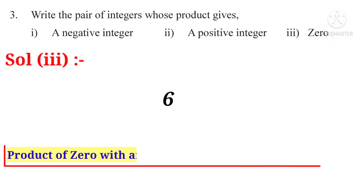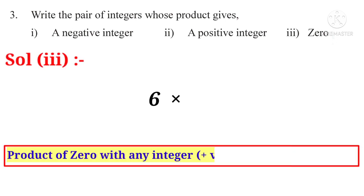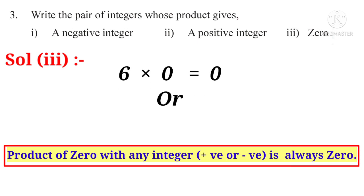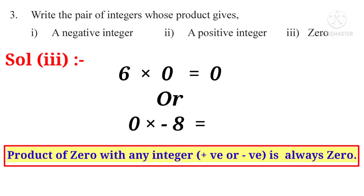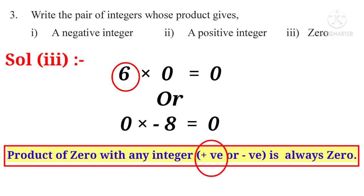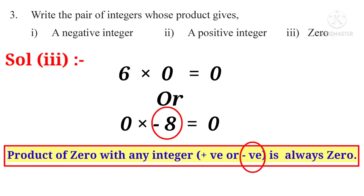Solution 3: To get a product of 0, one of the integers must be 0 and the other may be positive or negative — for example, 6 into 0 equals 0, and 0 into minus 8 equals 0.